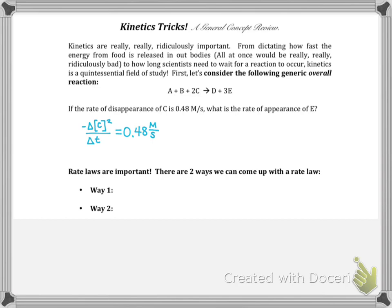So our first section of this worksheet gives us this reaction here between A, B, and C and it tells us if we look from the perspective of C, how fast the reaction is going. So they tell us that C is disappearing at a rate of 0.48 molar per second. I've written that here and they want us to figure out the rate of appearance of E. So whenever we're switching between different molecules, we're going to use the stoichiometry of our reaction.